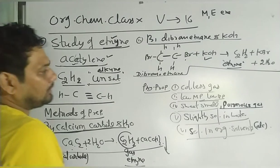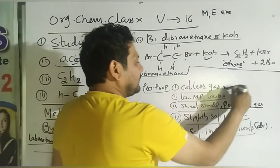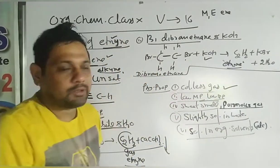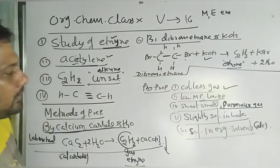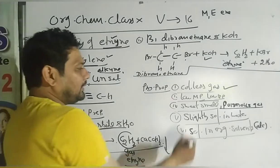Now the physical properties of ethyne. Ethyne is a colorless gas. It has a low melting point and a low boiling point.